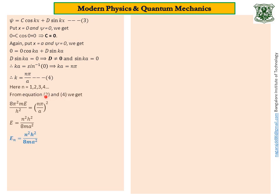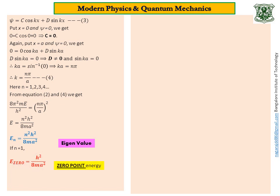From equations 2 and 4, we get 8π²mE/h² equals k², and replacing k with equation 4, we simplify further to get the energy eigenvalue: E_n equals n² h² / (8 m a²), where n is an integer. According to this equation, energy depends only on n, so it is better to write it as E_n. This is known as an eigenvalue. Substitute n equals 1 — note n cannot be zero, because if n equals zero, E becomes zero, meaning total energy is zero, which is not true; only potential energy is zero. So putting n equals 1 gives the least energy, called ground state energy or zero point energy: E₀ equals h² / (8 m a²).